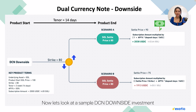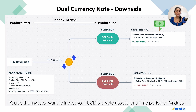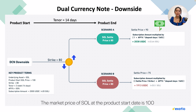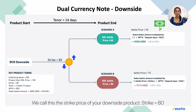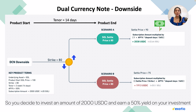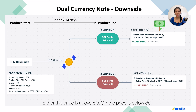Now let's look at a sample DCN downside investment. The underlying asset is Solana. The product start Solana price is 100, strike is 80, tenor is two weeks, APY is 50%, and subscription amount is 2000 USDC. You as the investor want to invest USDC for 14 days. The market price of Solana at the product start date is 100, and your market view is that the price will not fall below 80 in the next two weeks — the strike equals 80. So you invest 2000 USDC and earn a 50% yield. Two weeks later, there are two possible outcomes: either the price is above 80 or below 80. In both outcomes, you will earn your 50% APY yield.